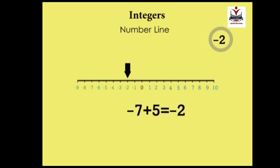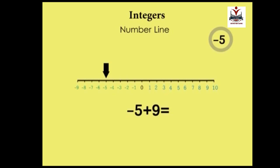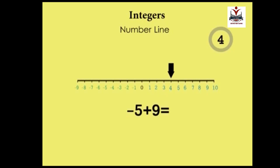Let's try minus 5 plus 9. From zero, we move five steps leftwards: 1, 2, 3, 4, and 5. And then nine steps towards the right: 1, 2, 3, 4, 5, 6, 7, 8, and 9. The answer is plus 4, but we don't write the positive sign.